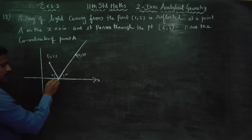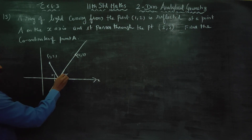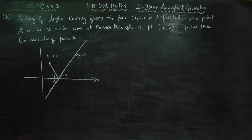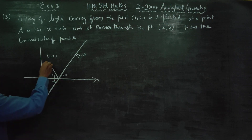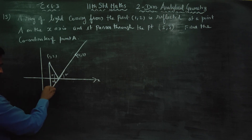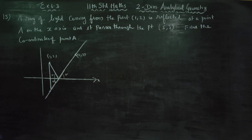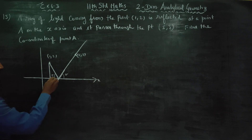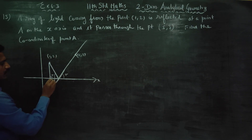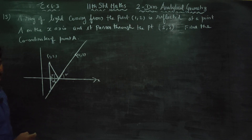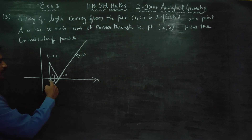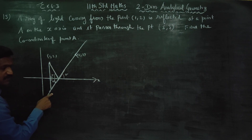This is the angle at the x-axis; vertically opposite angles are equal, so both angles are theta. Just draw a perpendicular line. This perpendicular gives 90 degrees, and this side is common. Now consider this triangle.